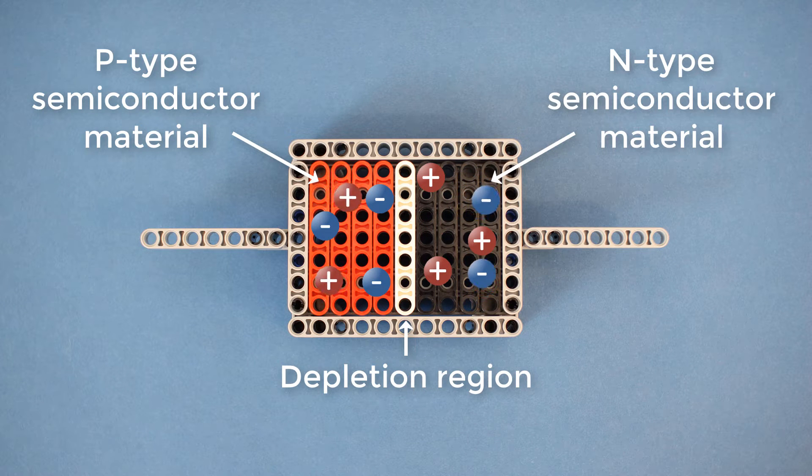It is difficult for electricity to move through this depletion region, so it acts as a type of insulator. We have two conducting materials that are separated by an insulator. This creates a very tiny capacitor, which we've seen before.